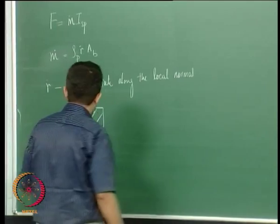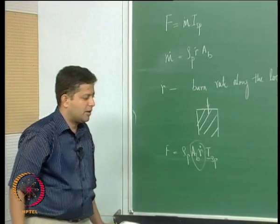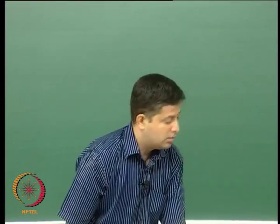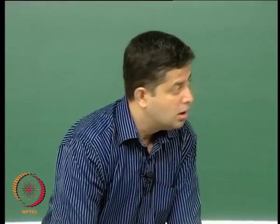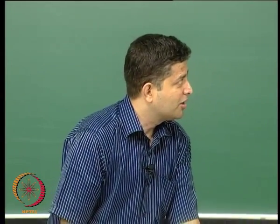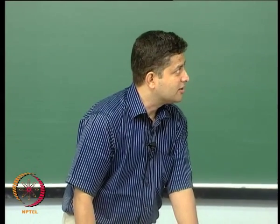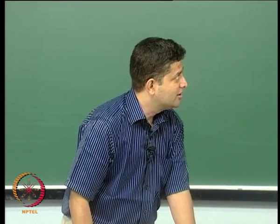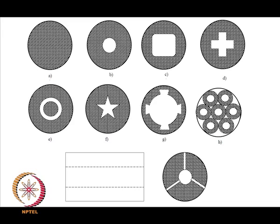Now the burning surface area — if you look at the various possibilities, there are a lot of options for a burning surface area. The shaded portion is the propellant grain and it can burn along its surfaces. This is known as a star grain, wherein it burns from inside to outside. So there are various ways in which you can change the burning surface area.